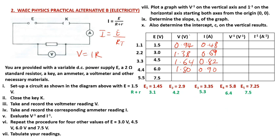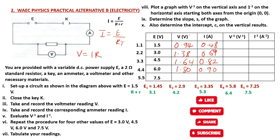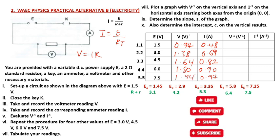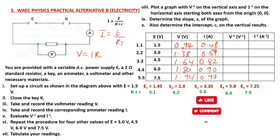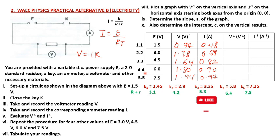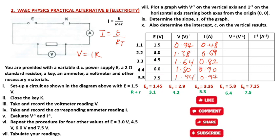Next, I divide 7.25 by 7.5 to obtain 0.97, then multiply by 2 to get 1.94. So these are all the values I desired to obtain. Look at the trend — as the EMF increases, both the current and voltage also increase. So there is a clear trend, and that works out perfectly fine. This is a very simple way you can obtain your results without actually carrying out the experiment.